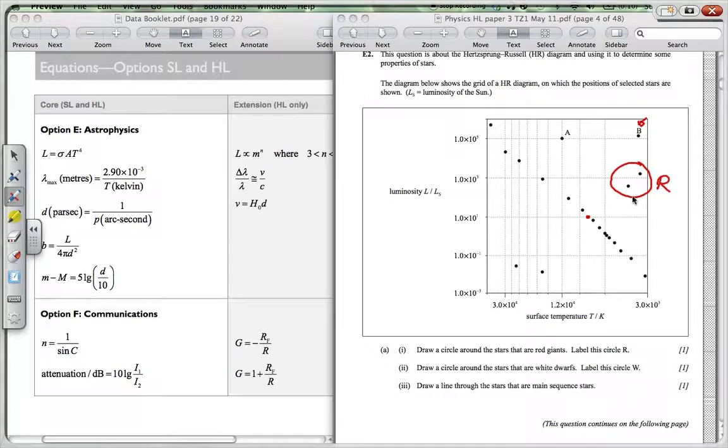But the color of it is in this range over here, which is your red range over here. This is your sort of yellow range over there corresponding to the Sun. Draw a circle around stars that are white dwarfs. These over here would be your white dwarfs. And we need a W there. And then draw a line through the stars that are main sequence stars. So this would be through there like that.